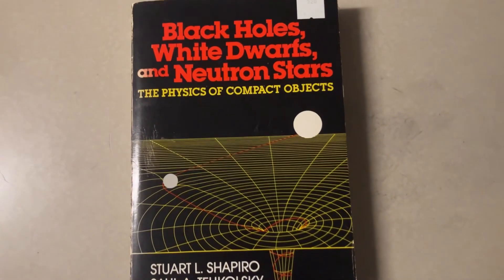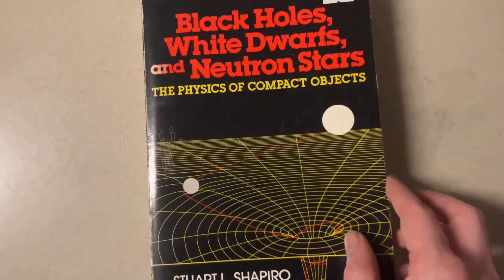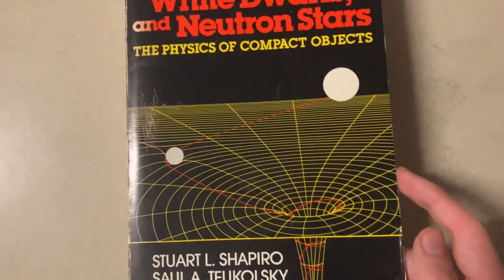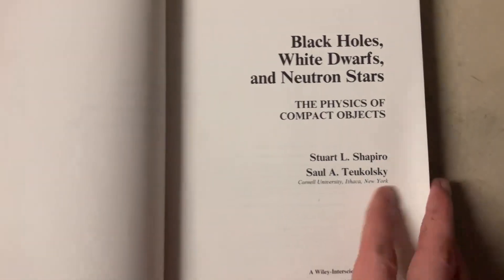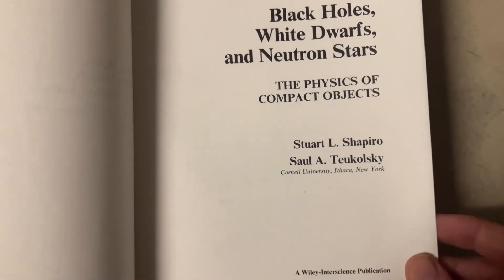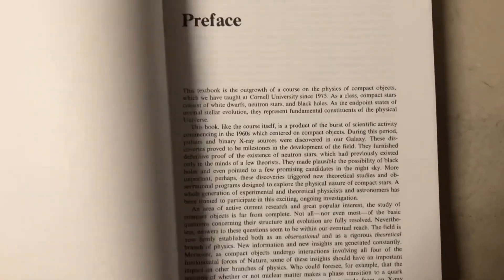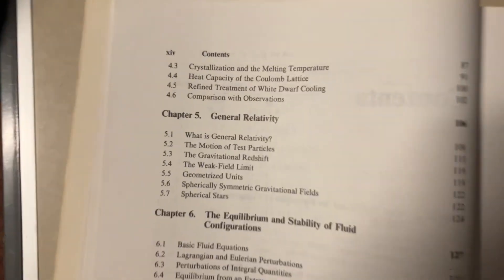We got this book on black holes, white dwarfs, and neutron stars, the physics of compact objects. This is by Shapiro and Tukolsky. Let's go ahead and see what we got going on.